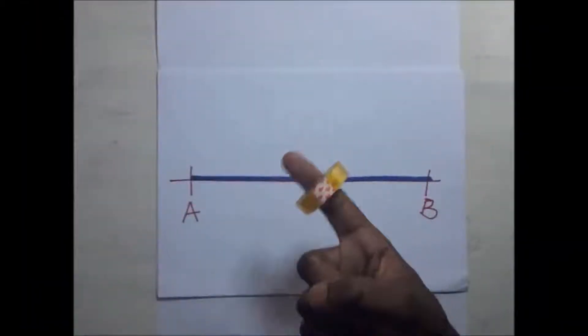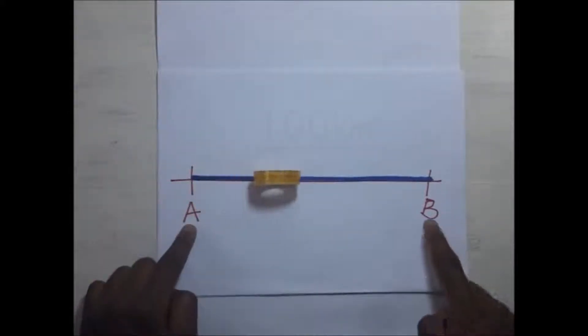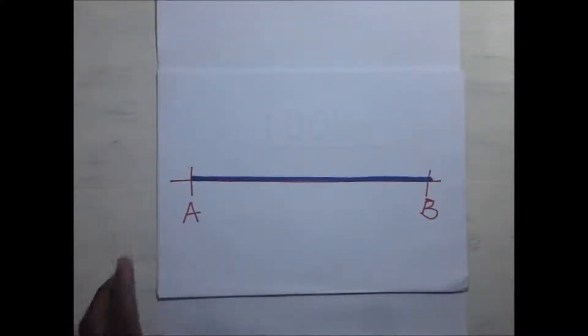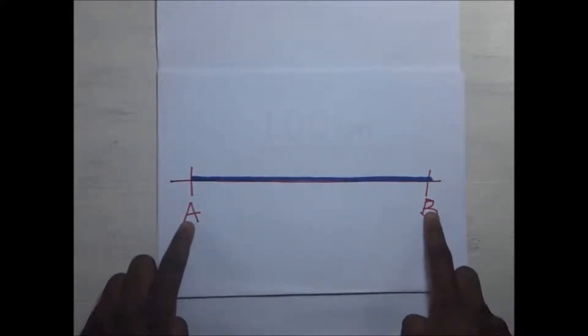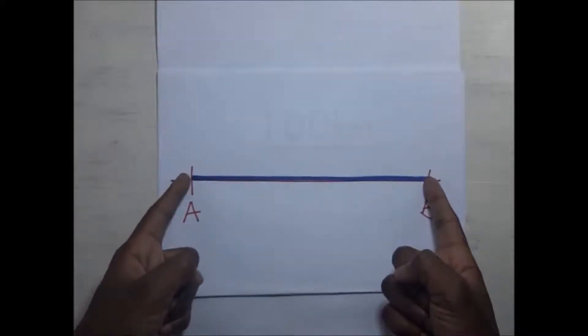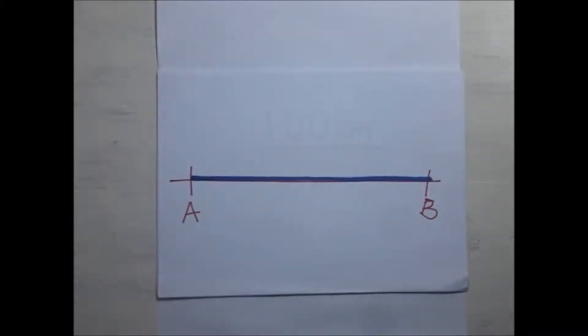This is a cellotape roll, so I'm going to roll it from here — this is part A and that's part B. This cellotape roll rolls in a straight line from part A to part B. Now if this cellotape roll is to roll from part A to part B in a straight line and it is not interrupted, it means it will have covered a certain distance in a certain time frame.